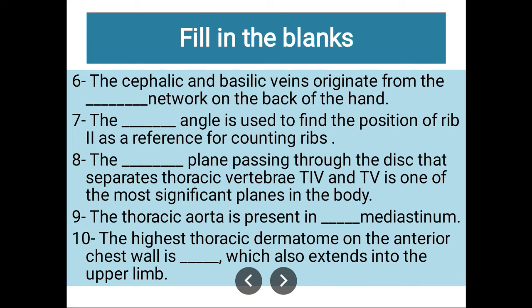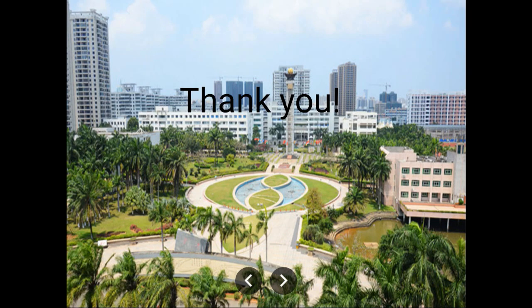Question nine: the thoracic aorta is present in which part of the mediastinum? That is the posterior mediastinum. Question ten: the highest thoracic dermatome on the anterior chest wall, which is also extended into the upper limb, is T2 — the highest thoracic wall dermatome is T2. Thank you very much, see you in the next video.